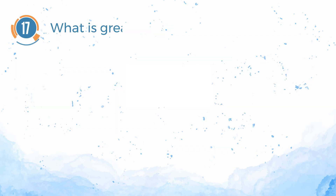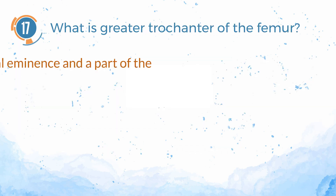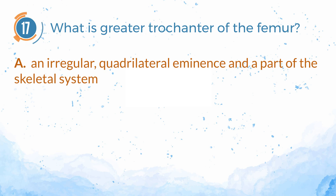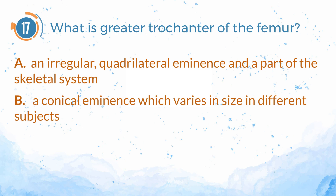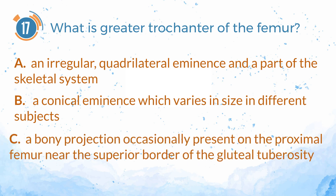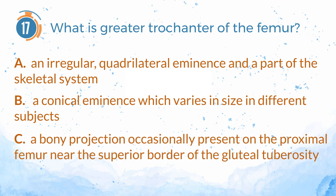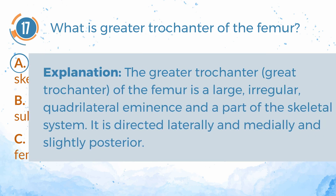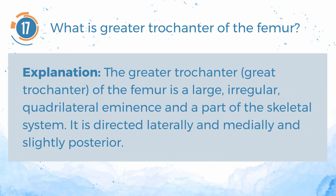Number 17. What is the greater trochanter of the femur? A. An irregular quadrilateral eminence and a part of the skeletal system. B. A conical eminence which varies in size in different subjects. C. A bony projection occasionally present on the proximal femur near the superior border of the gluteal tuberosity. The answer is A — an irregular quadrilateral eminence and a part of the skeletal system. The greater trochanter of the femur is a large irregular quadrilateral eminence, directed laterally and medially and slightly posterior.